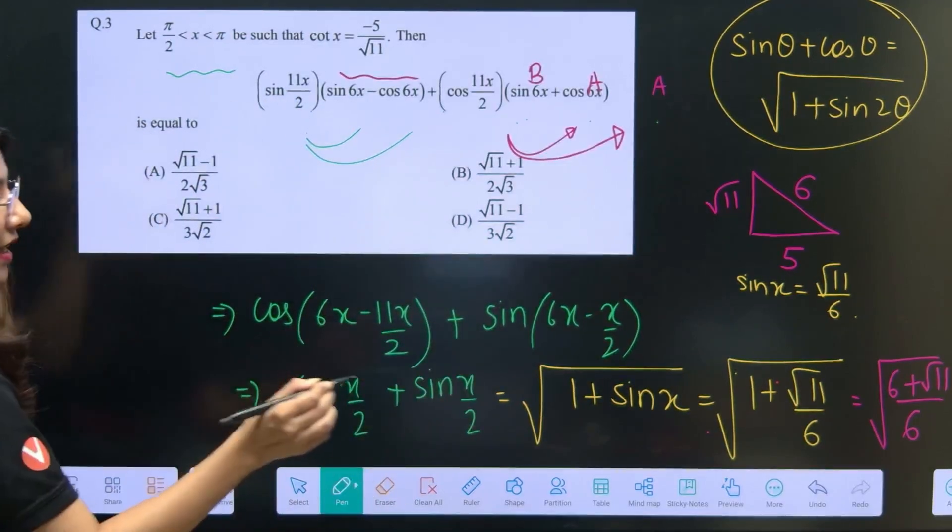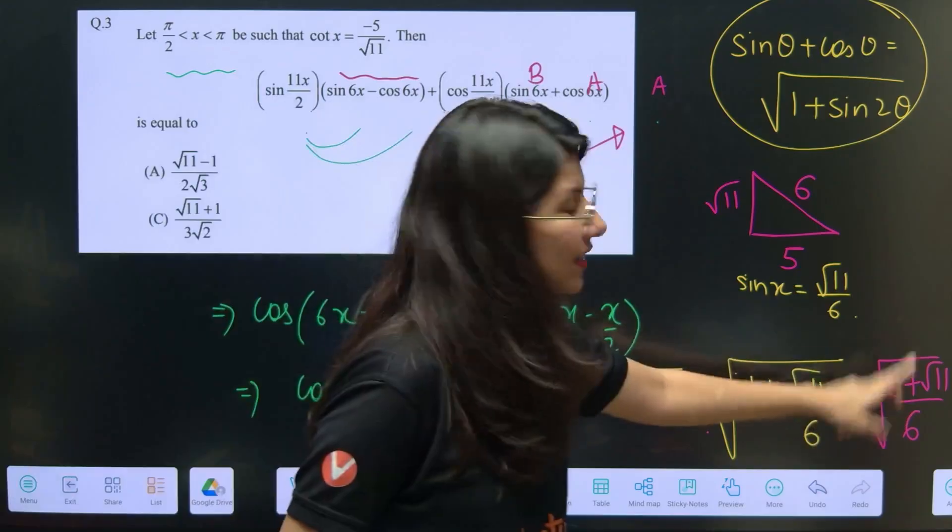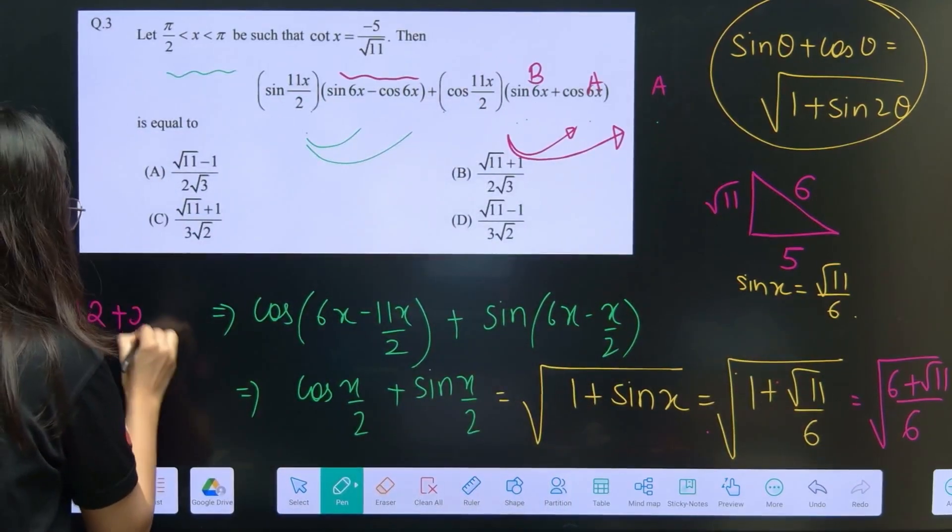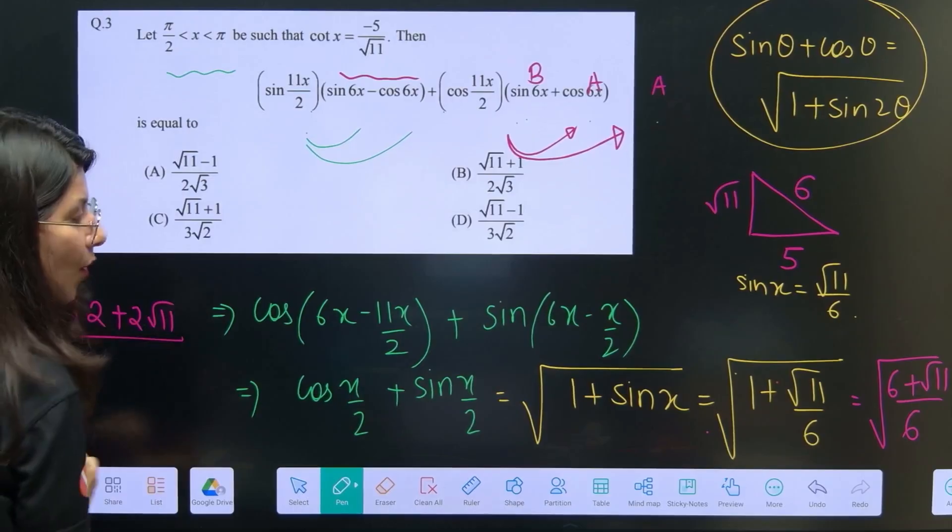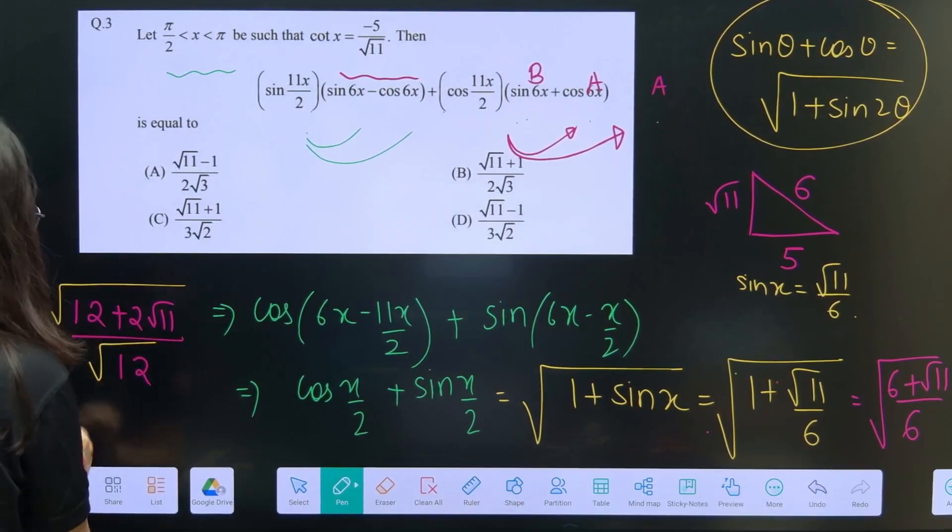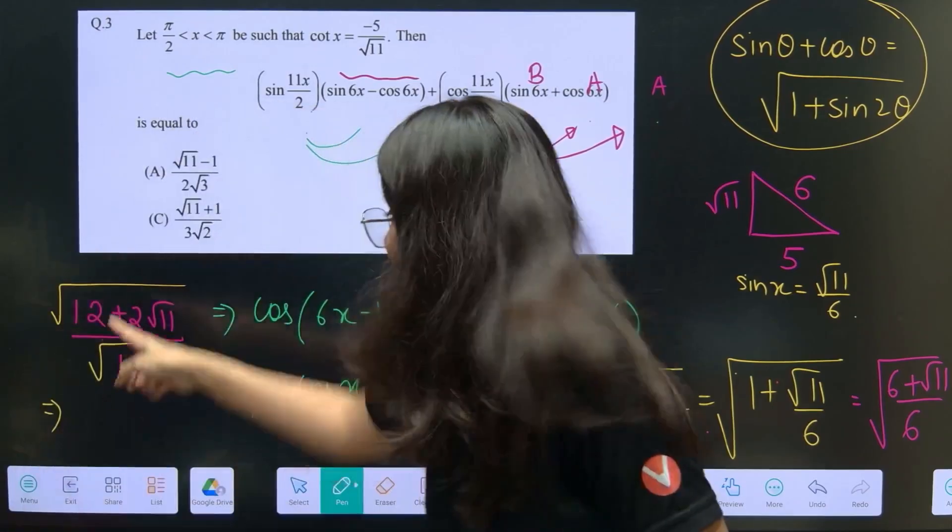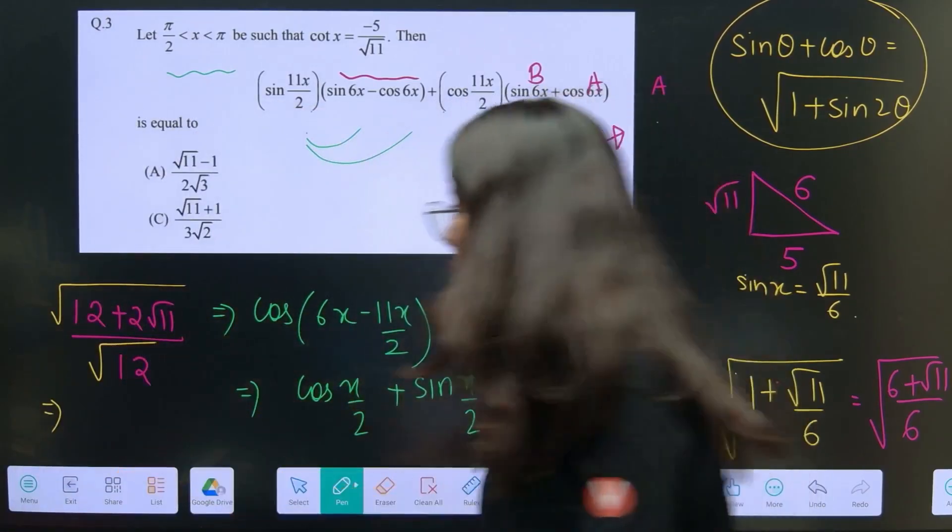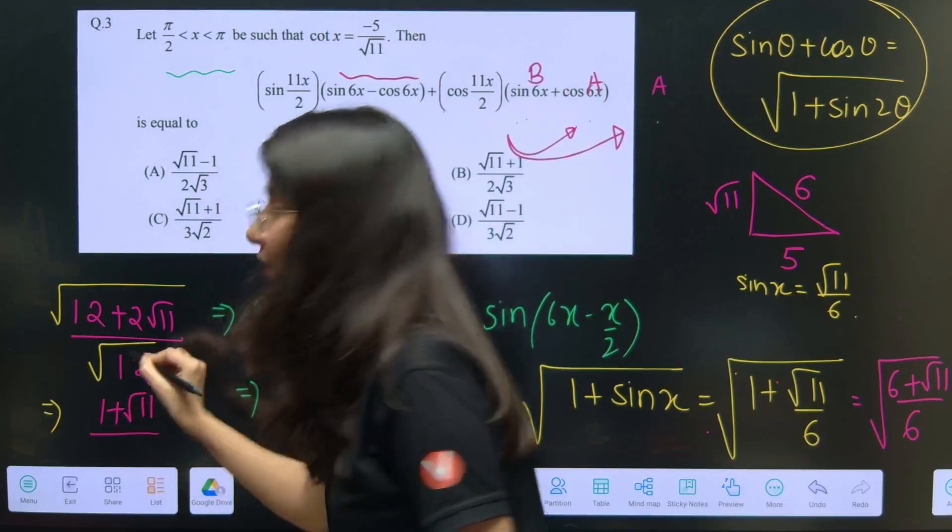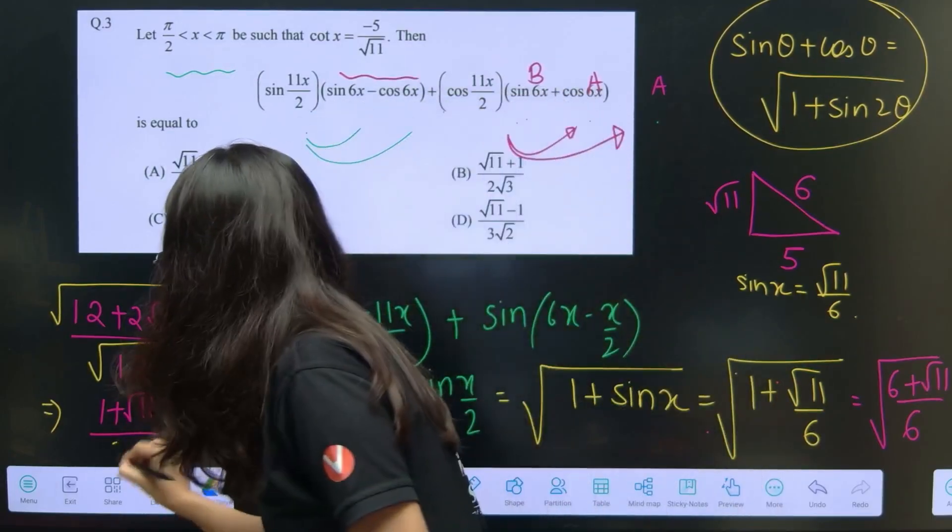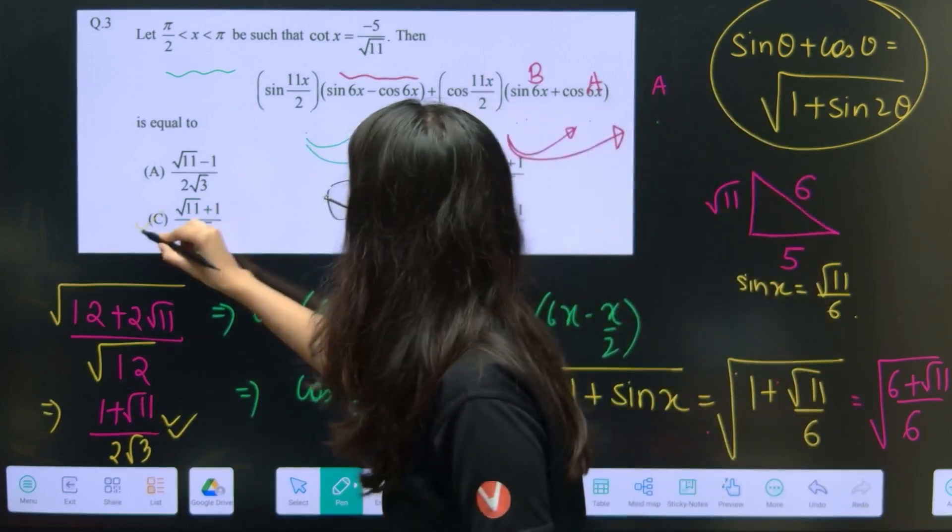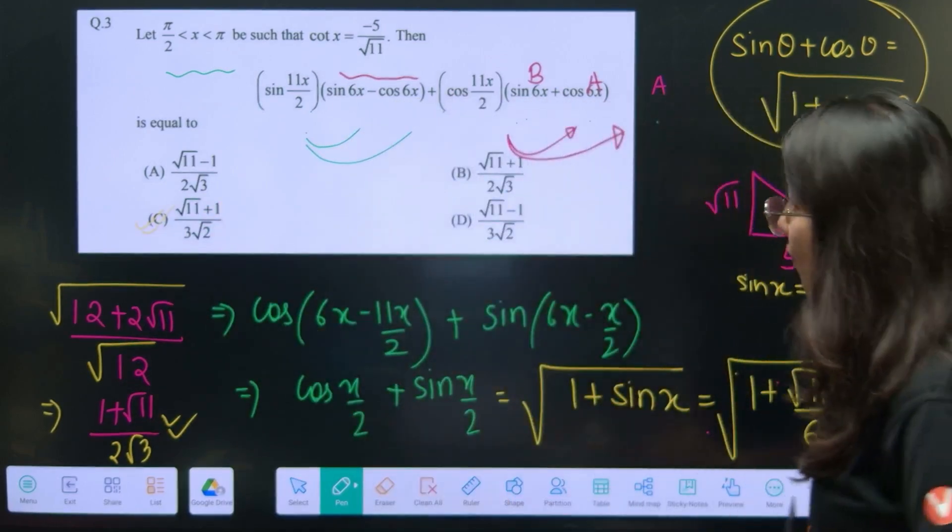Just take LCM, 6 plus root 11 by 6. Now multiply 2 and 2 both sides numerator and denominator. So this is 12 plus 2 root 11 upon 12, this is also square root, this is also square root. Now tell me, you just have done it, can you see this is what? Square root of this, 1 plus root 11, and root 12 is going to be 2 root 3.